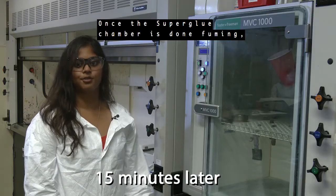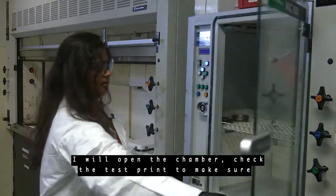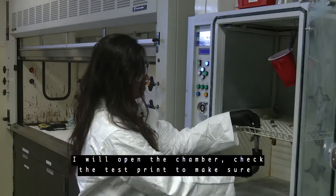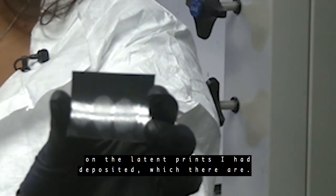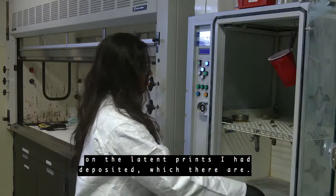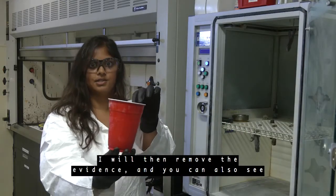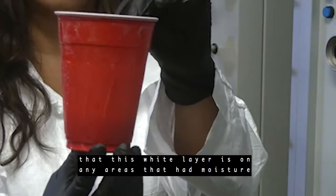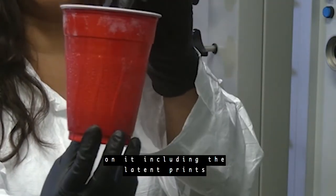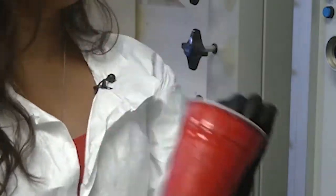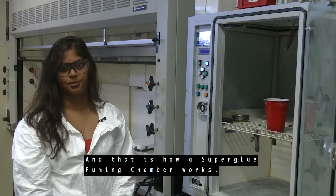Once the superglue chamber is done fuming, I will open the chamber, check the test print to make sure that there is a white layer on the latent prints I had deposited, which there are. I will then remove the evidence and you can also see that this white layer is on any areas that had moisture on it, including the latent prints that are along the top edge of the cup. And that is how a superglue fuming chamber works.